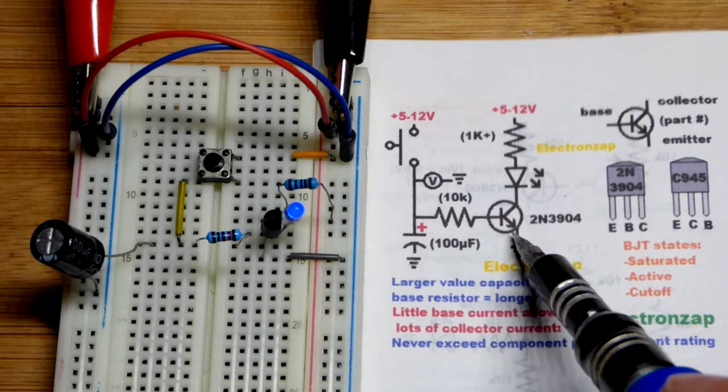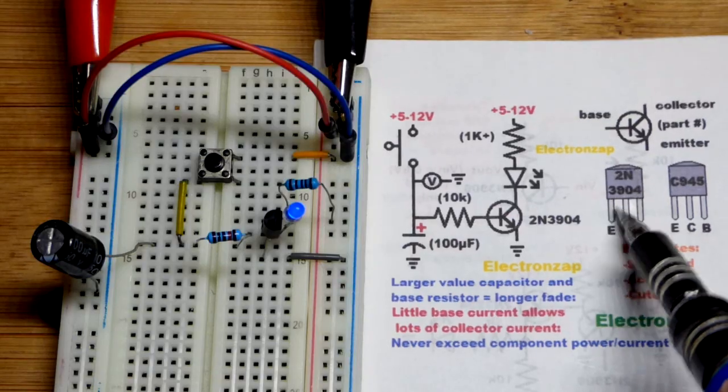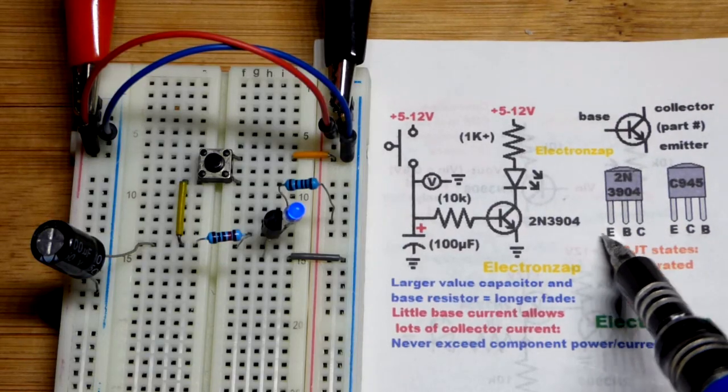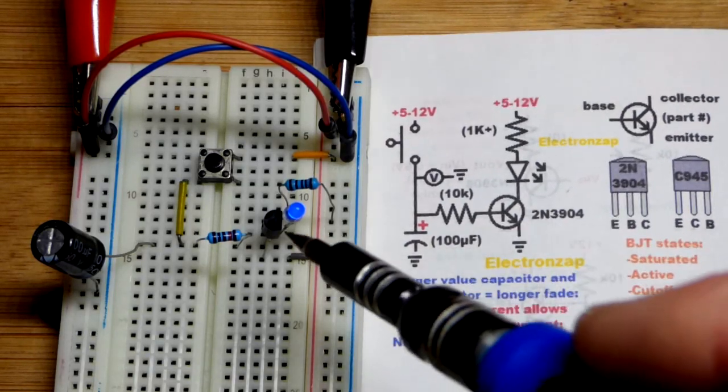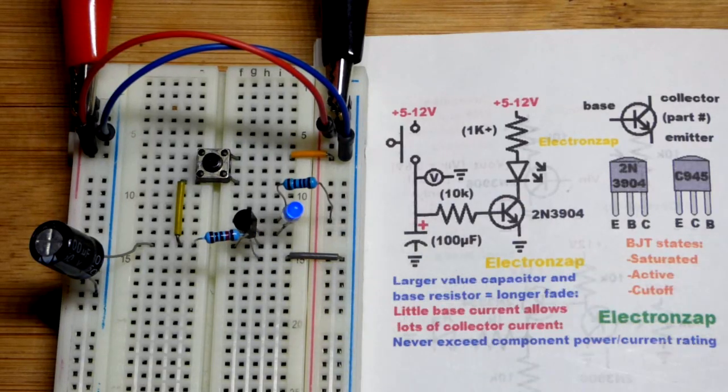So now in this video we have a transistor switch right there. I'm going to use the 2N3904. If you're looking at the flat side, left pin is emitter, middle pin is base, right pin is collector. So I got it turned to the right right there. So emitter, base, collector.